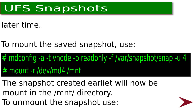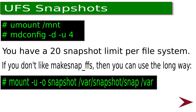To mount the saved snapshot, use the command shown, and the snapshot created earlier will now be mounted in the /mount directory. To unmount the snapshot, use unmount, mount, mdconfig, with the -du and -4 switches. If you don't like the make_snap_FFS approach, you can use the alternative command shown on screen, which is a bit more long-winded but will produce the same results.